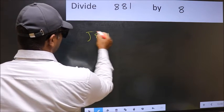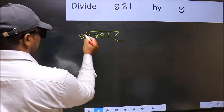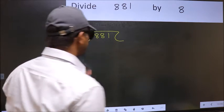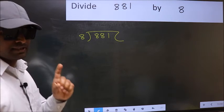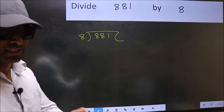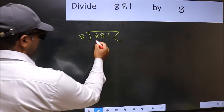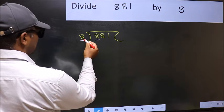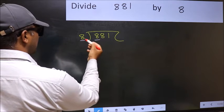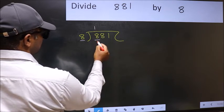881 and 8 here. This is your step 1. Next, here we have 8 and here also 8. When do we get 8 in the 8 table? 8 once, 8.